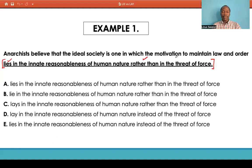Starting out with the initial sentence, anarchists believe that the identity society is the one in which the motivation to maintain law and order lies in the innate reasonableness of human nature rather than the threat of force. As it's constructed, I can't really tell any errors in it. It appears that it is actually correct because you can't really spot errors in this underlying section. So A is a strong candidate for being our answer.